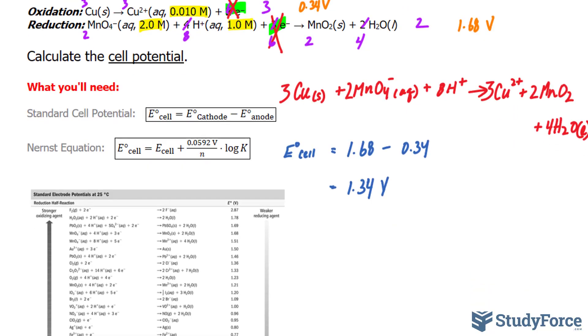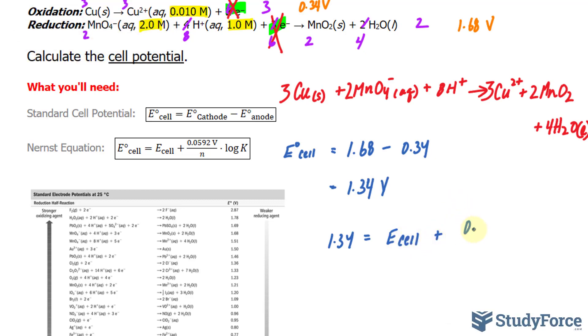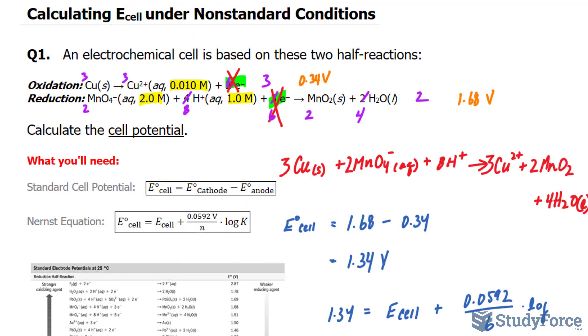Now I'm going to substitute this value into the Nernst equation, where I have 1.34 is equal to what I'm looking for, E_cell, plus 0.0592 divided by N, which represents the amount of electrons that were cancelled out. So 6 were cancelled out in these reactions, I'll have to place 6 as my N value. Multiply to log of our constant.